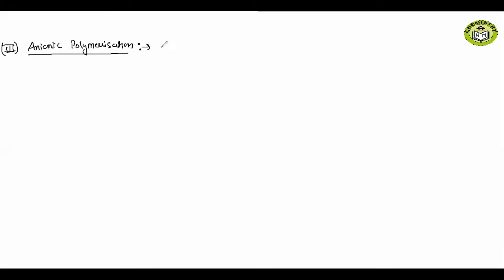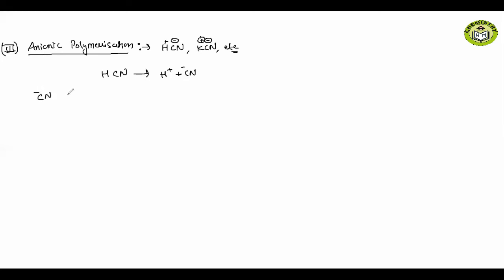In anionic polymerization, you need some nucleophiles like HCN, KCN, etc. These nucleophiles work where the negative part is stronger than the positive part. When writing HCN, it breaks into H+ plus CN-. The CN- is stronger than H+, so the CN- negative anion attacks one of the carbons of the double bond and the charge shifts to the other carbon.